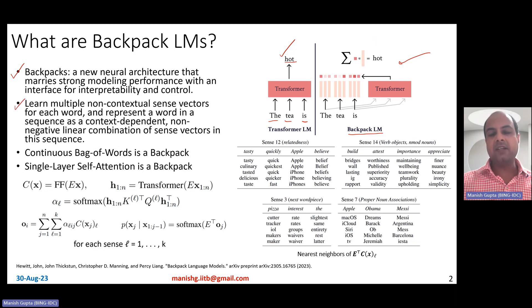They are contextual in nature. They actually learn multiple non-contextual sense vectors for each word and then represent a word in a sequence as a context-dependent non-negative linear combination. I'll explain what this means, but the broad idea is that they can actually learn sense vectors for every word and then they can make use of the right sense vector in the current context.